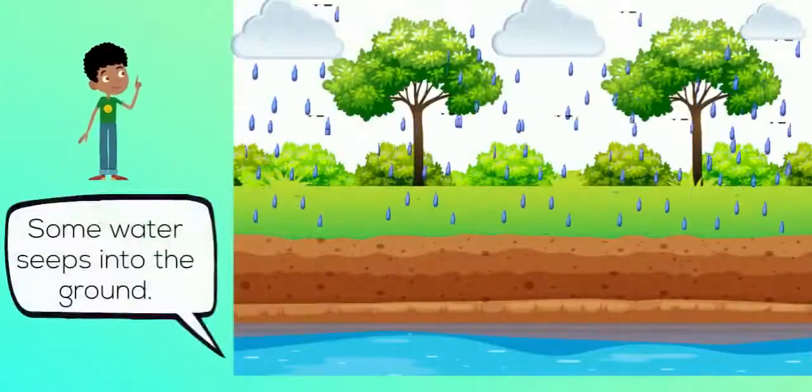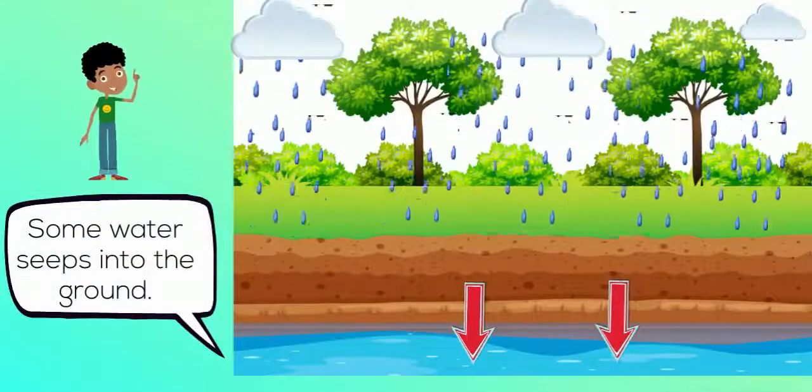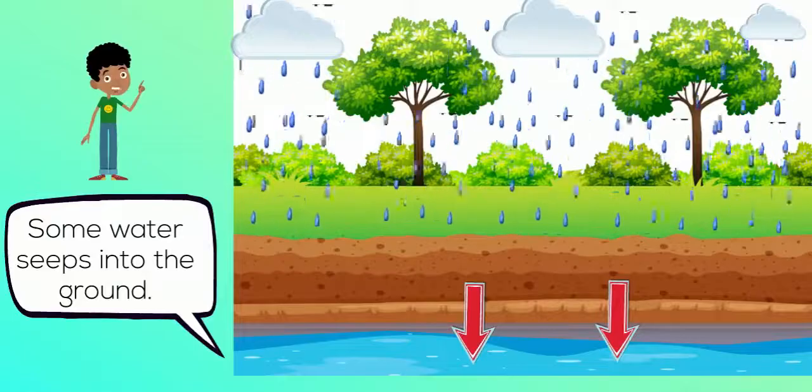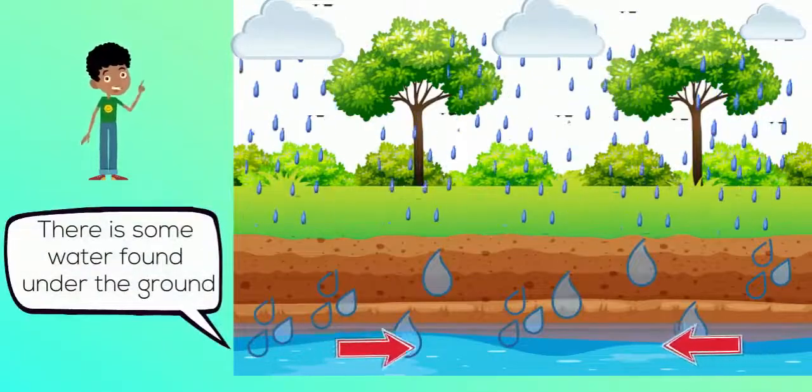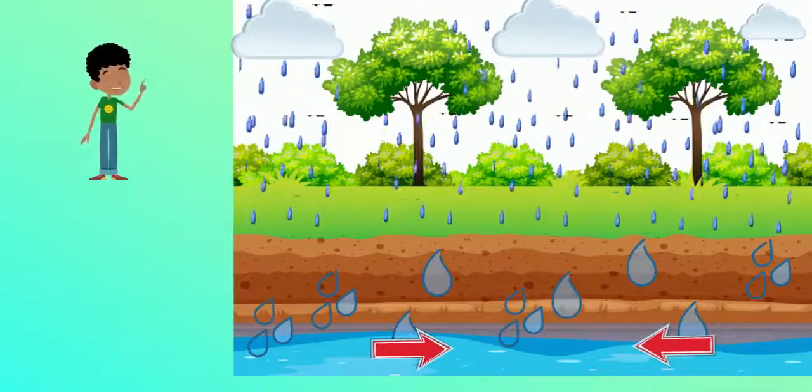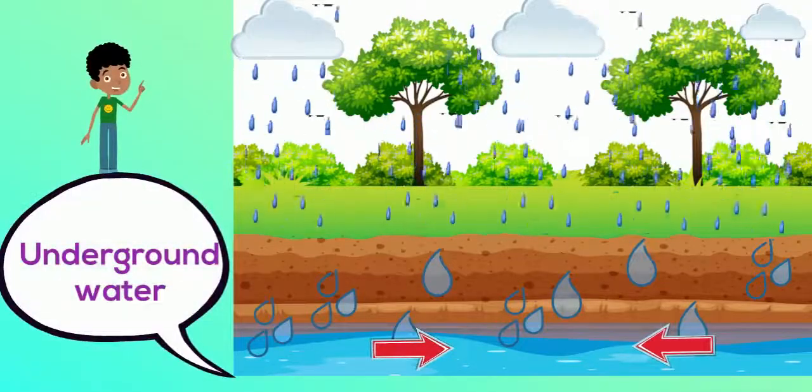Some rainwater seeps into the ground. There is some water found under the ground and we call it underground water.